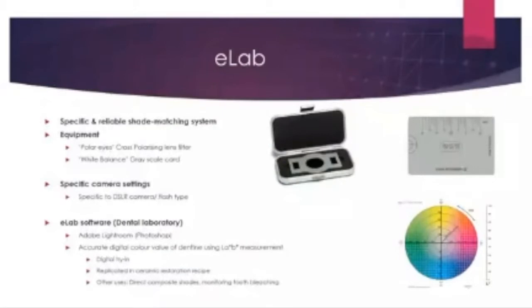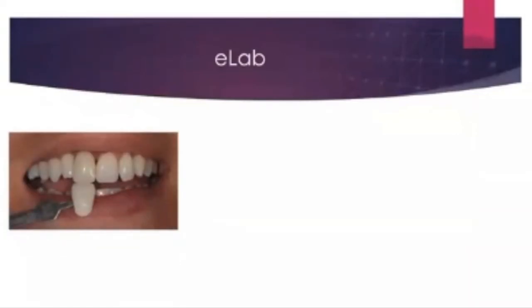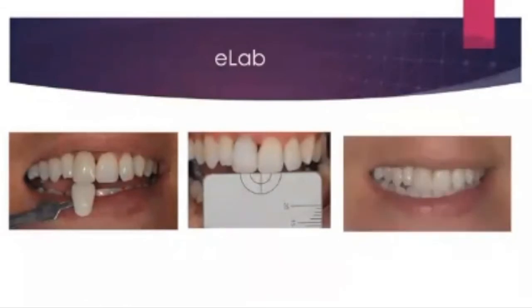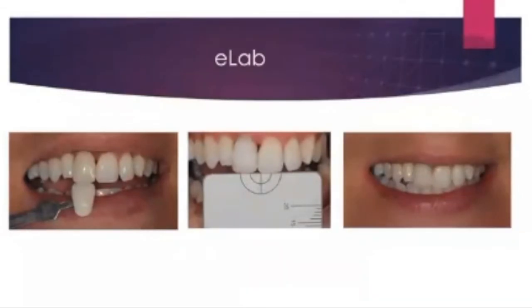There are other uses for it beyond creating aesthetic ceramic restorations. You can use this system to take photographs of dentine and composite shades to match the best shades to the anterior tooth, and you can use it to monitor the outcome of tooth bleaching as well. This is a case of my own — an upper right one implant crown. The first crown created by the lab had a shade that wasn't quite ideal. I took a cross-polarizing photo with the grey scale card, and you can see the difference in value. The laboratory then created a new crown based on that, and the patient was happy. I know that Nexis Dental are using that system at the moment.